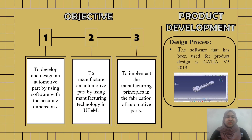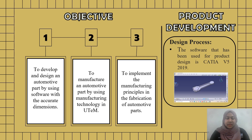There are three objectives in this project. First, to develop and design an automotive part by using software with accurate dimensions. Second, to manufacture an automotive part by using manufacturing technology in UTEM. Third, to implement the manufacturing principles in the fabrication of automotive parts.